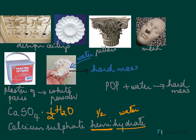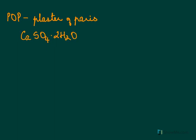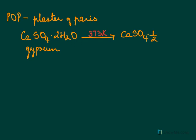Now we will see how POP or calcium sulphate hemihydrate is prepared. POP is prepared from gypsum. Gypsum has the formula CaSO4·2H2O — it is called calcium sulphate dihydrate. When gypsum is heated at 373 Kelvin, it loses its water of crystallization and becomes CaSO4·½H2O, releasing one and a half molecules of water.